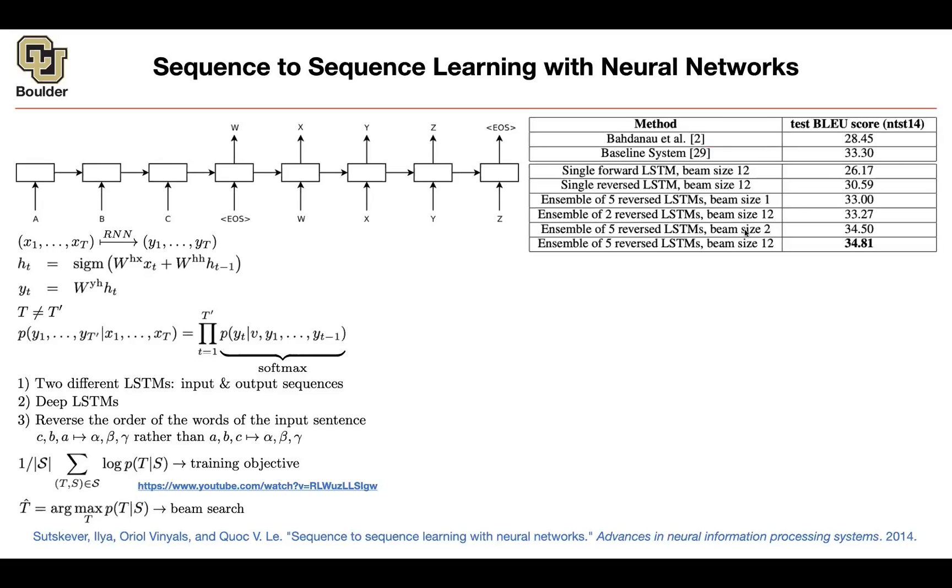So there is a way to solve this maximization problem, beam search. That's how you solve that problem. Let's see some numbers. These are the numbers from the previous paper, 28.45. As you can see, this is still far behind the baseline system. The baseline system is Moses. It's not using any deep learning at all.